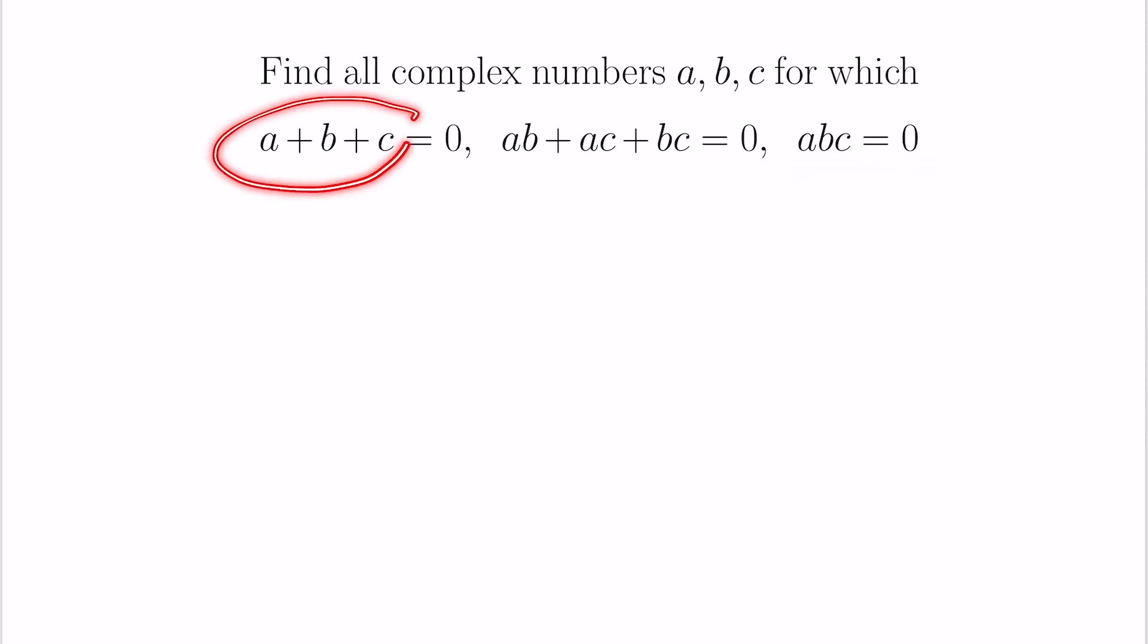So we see that these terms on the left look like things involving Vieta's formula. So let's actually create a polynomial, we'll call it p of x, that takes into consideration all of these values a, b, and c. So it has a, b, and c as roots.